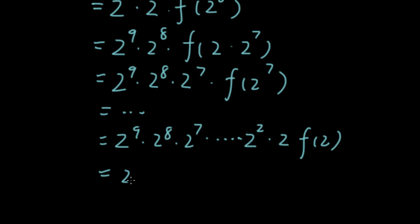So this is 2^9, 2^8, down to 2^2 and 2. And when we multiply these numbers, we add the exponents because they have the same base.